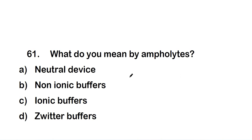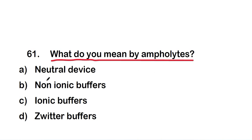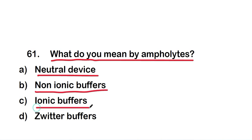Welcome back to our new video on MCQs on biochemistry, Part 4 of this series. The first question is: what do you mean by ampholytes? The options are: option A, neutral device; option B, non-ionic buffer; option C, ionic buffer; or option D, zwitter buffer.